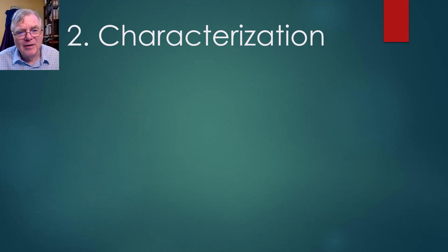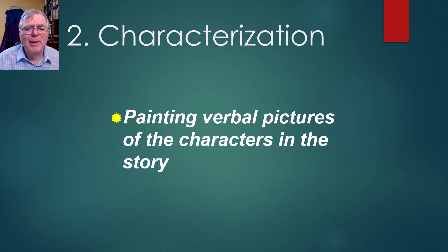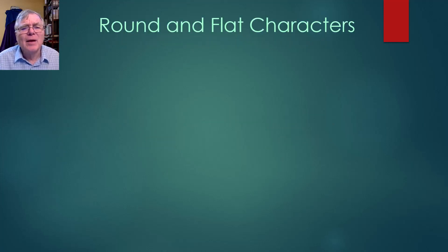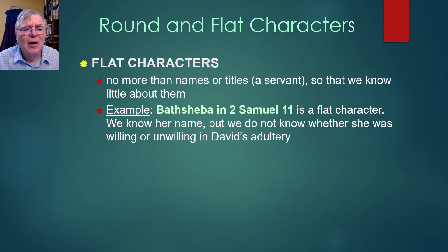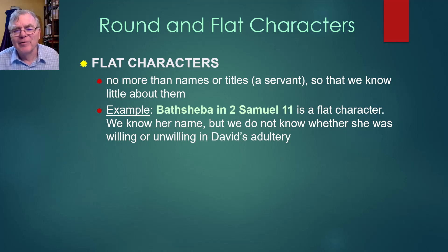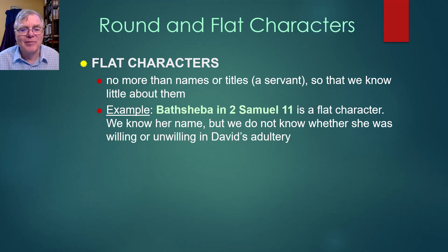Characterization is another thing that the literary approach involves — painting a verbal picture of what the characters in the story are like. In narratives, broadly speaking, there are two types of characters: round characters and flat characters. A flat character is someone you know very little about — maybe just their name or their title. There was just a servant there; we don't know his name or much about him. In the story of 2 Samuel 11, Bathsheba is a flat character — we know her name, but we don't know what she was thinking when David called her to the palace or whether she went willingly or unwillingly.